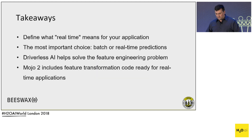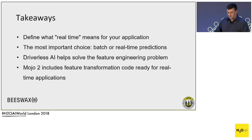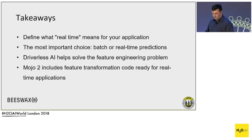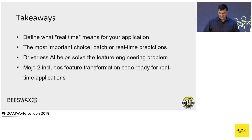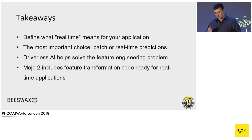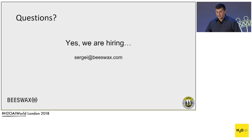To summarize: when designing for real-time, define what that means first. Make a choice between batch predictions, real-time predictions, or hybrid. Driverless AI does solve the feature engineering problem, which saves tons of time. And Mojo 2 is very exciting because the feature transformation code is ready for real-time. Thank you.